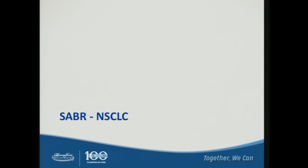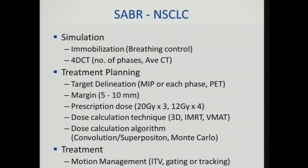For non-small cell lung cancer, there are many things to consider. In simulation: immobilization, whether to do breathing control, and 4D CT — now standard to evaluate motion. In treatment planning: target delineation on MIP or each phase, margin (ranging 5–10 mm, with more superior-inferior margin for larger motion), and prescription dose — some institutions give 20 Gray times 3 fractions (RTOG protocol), others like the newer RTOG 0915 give 12 Gray times 4. Dose calculation technique options include 3D, IMRT, or VMAT, and for moving targets you need to consider interplay effect and whether to use modulation.